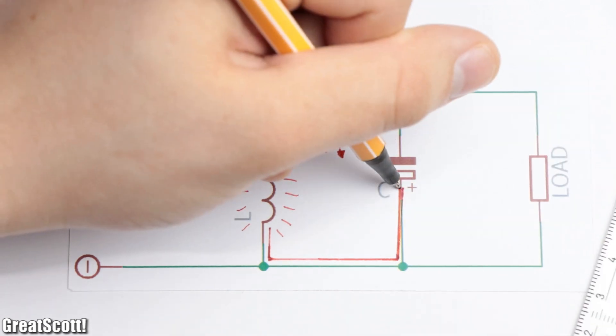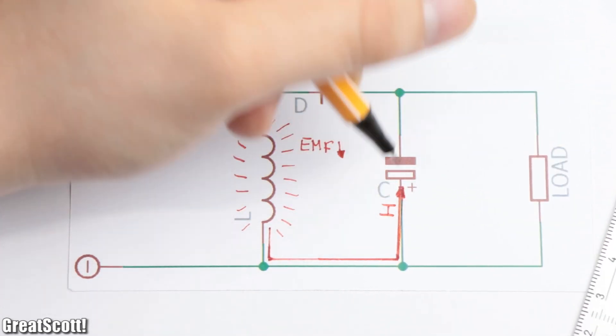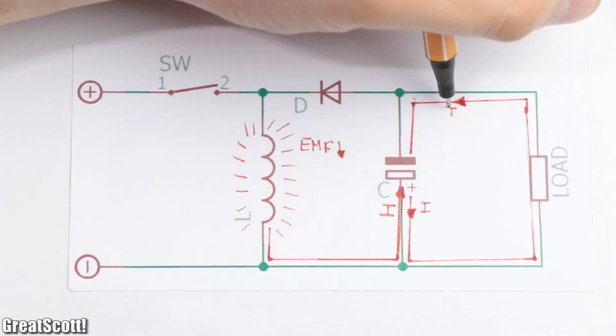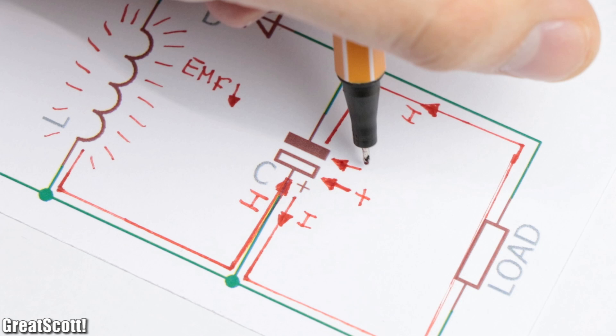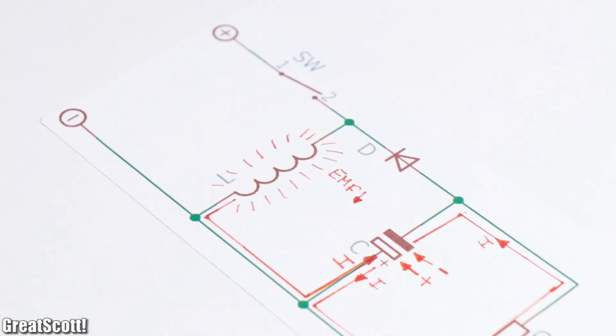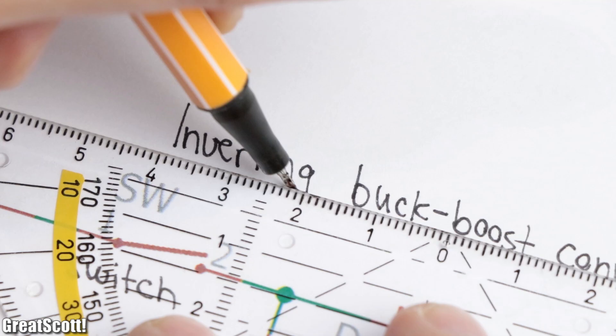Once the switch opens, the stored energy of the coil is then transferred into the capacitor by charging it up, and the cycle repeats. But it is noticeable that the positive and negative side of the capacitor is located opposing to the voltage input. That is why it is called an inverting buck-boost.